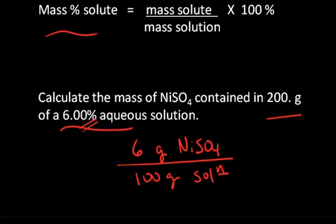When we express it as percent, of course, we multiply that fraction by 100%. But when we're using it as a unit factor conversion in this type of problem, we use the fraction: 6 grams of nickel sulfate per 100 grams of solution.